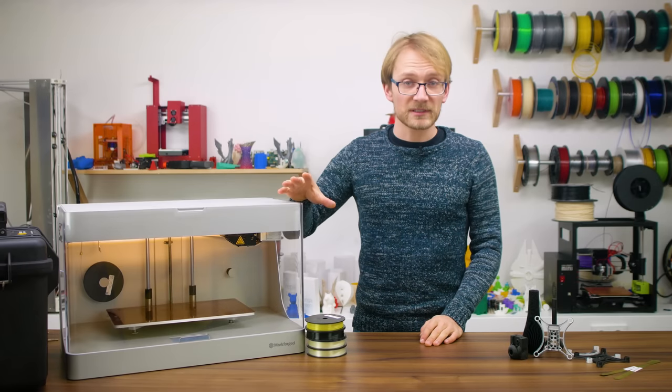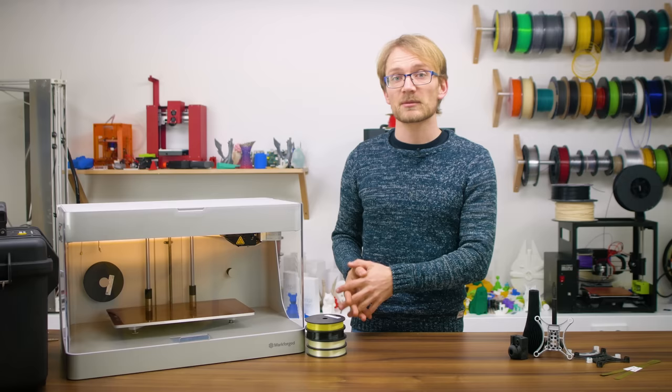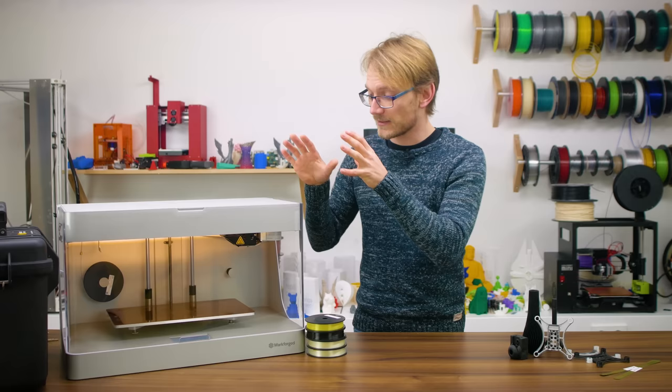The Markforged line of 3D printers is limited to their own Eiger software. Each machine only uses one type of expensive, specialized filament. The carbon fiber inlay process and a few other great parts of the machine are locked down by patents, and this machine is $13,500 before tax.